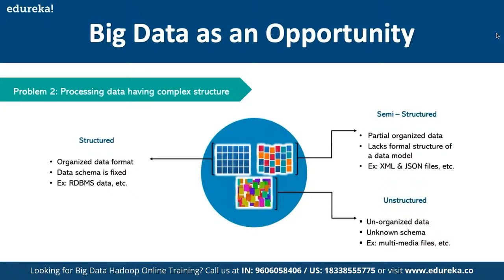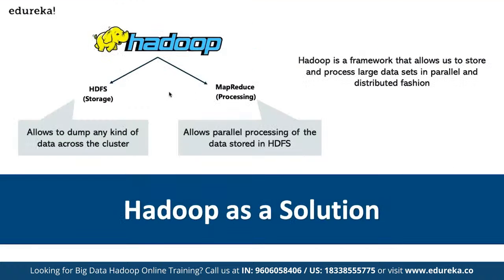Hadoop is offered as a solution to big data challenges. Hadoop allows us to dump any kind of data across a cluster. It has two main core components: HDFS, which stands for Hadoop Distributed File System, and MapReduce, which handles processing and allows us to parallel-process the data stored in HDFS.